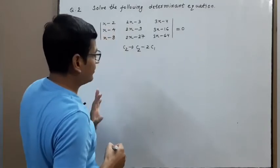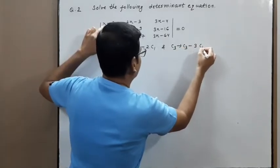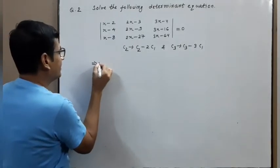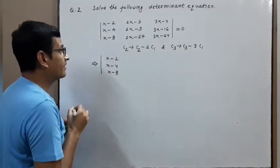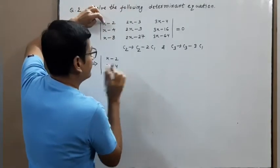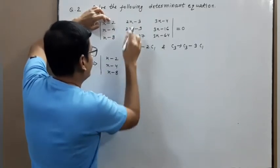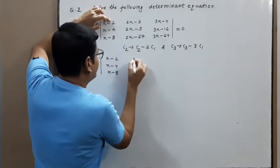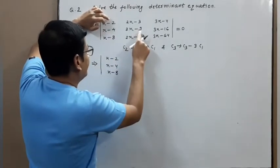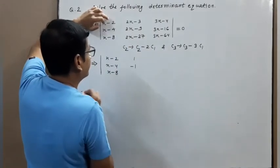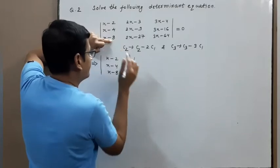C2 → C2 − 2·C1: 2x − 2x cancels. And C3 → C3 − 3·C1. Next step: x, −2, −4, −8 remain as is. Then 2x − 2x cancels; −3 and −4 gives −3+4 = +1. Then 2x − 2x cancels; −9+8 = −1. Then −27.